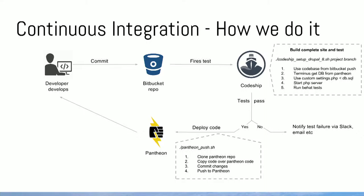CodeShip basically builds the complete website — it provides a base VM or environment that you can do what you want with. In this case we run a script which uses the codebase from a Bitbucket push, uses Terminus (a Pantheon tool) to get a database — in this case a development database — then pulls in that database, starts the server, and runs some BHAT tests. If the tests don't pass, we get notified and the developer can fix them. If they do pass, that gets automatically deployed by cloning down the Pantheon repo, copying over our Bitbucket code, and committing those changes.